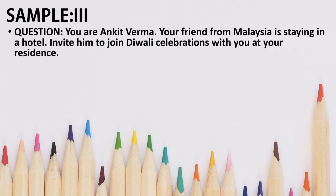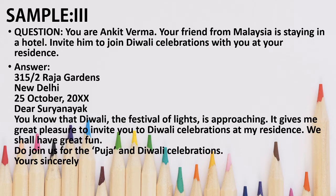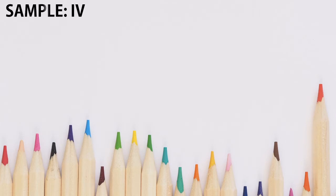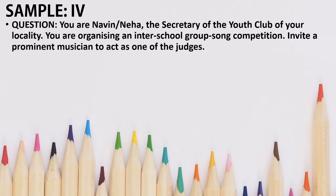Example three for informal invitation: You are Ankit Verma. Your friend from Malaysia is staying in a hotel — invite him to join the Diwali celebrations at your residence. Begin with the address, date, salutation with name, then the message: 'You know that Diwali, the festival of lights, is approaching. It gives me great pleasure to invite you to Diwali celebrations at my residence. We shall have great fun — do join us for the puja and Diwali celebrations.' Complementary close follows.